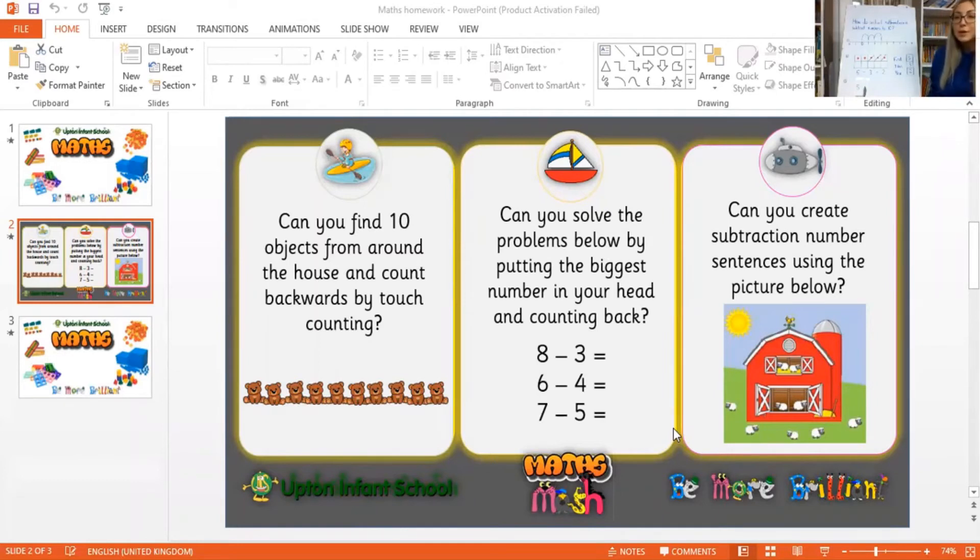The next challenge is, can you solve the problems below by picking the biggest number in your head and counting backwards? So 8 take away 3 equals, 6 take away 4 equals, 7 take away 5 equals. And that's using our mental math method.